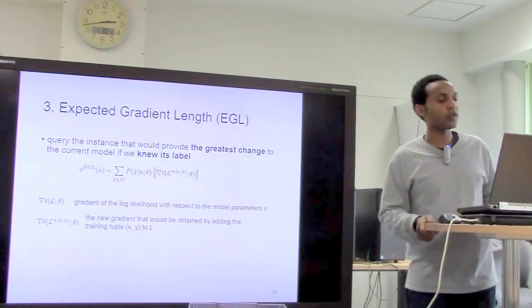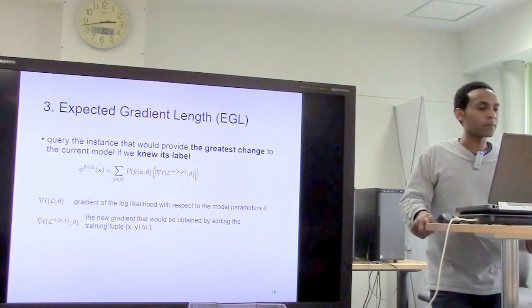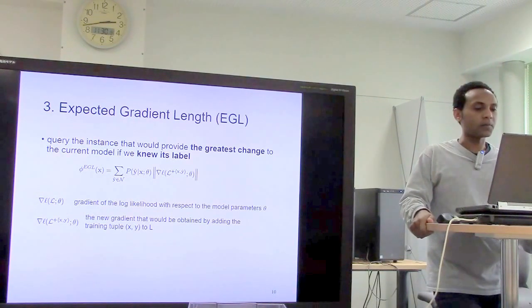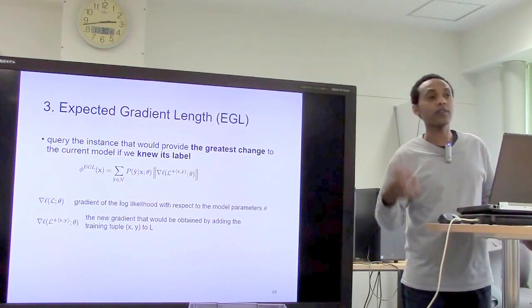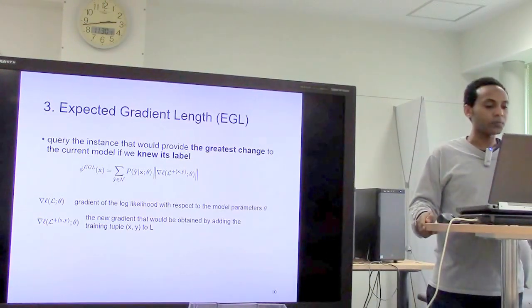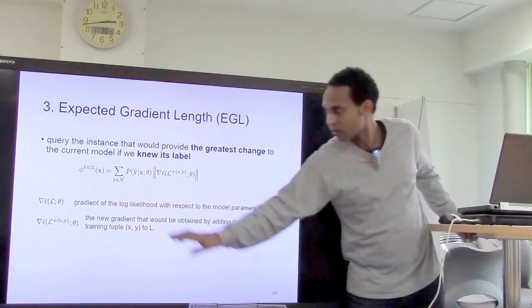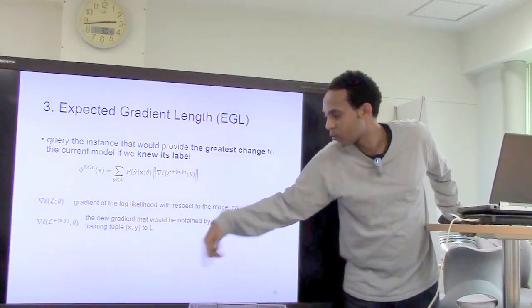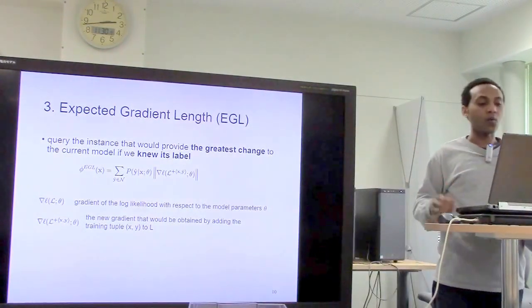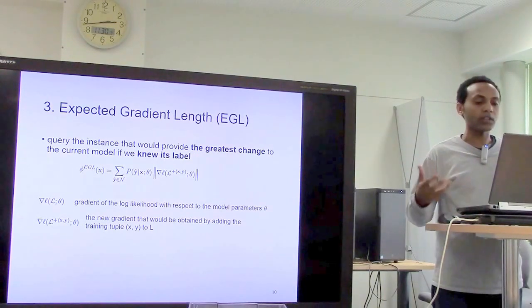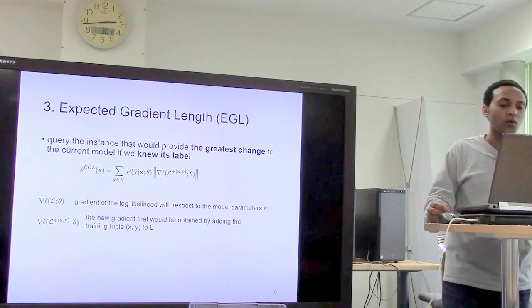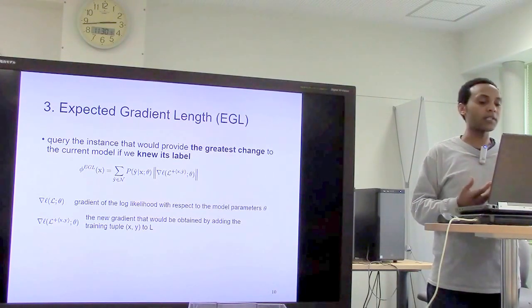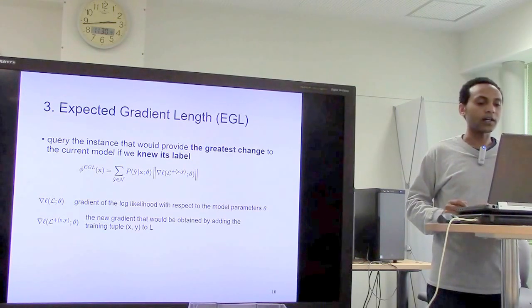The third general approach is expected gradient length. Here, the query selects the instance that would most improve successive models if its label were known. The first term measures the gradient of the log likelihood, and the second term measures the new gradient that would be added to the training set given the predicted label. The question is: which label could bring about the greatest change or improvement if assigned to an instance?